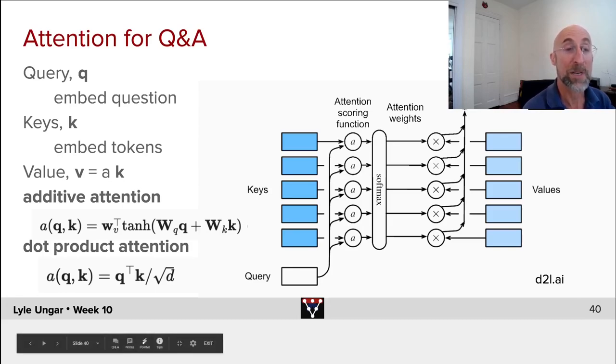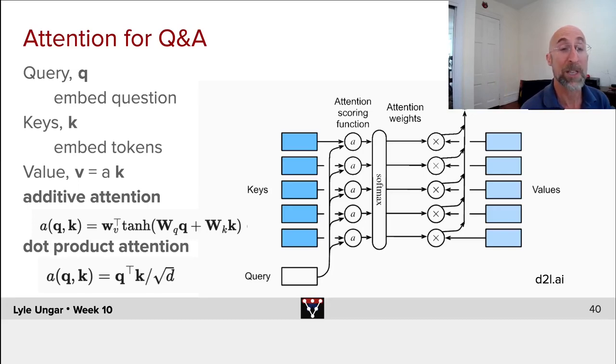If the query and the key are the same length, each of size 300, we just take the dot product between them, usually divide that by the square root of 300, the length of them to keep it normalized, and then we'll also softmax that. So two different ways but both of them are measuring something about how similar is this query to this key, how much does this query tell me about that key.